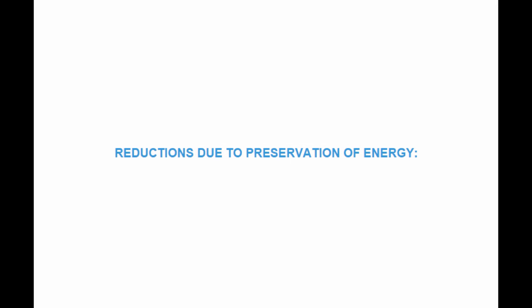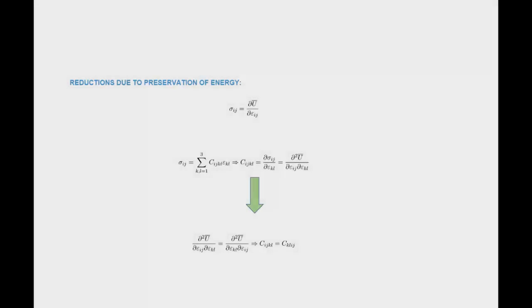Next we're going to reduce the number of constants by considering that this material is elastic, which means it preserves energy. Saying that the material is elastic means there's an energy that can be stored in the material when it's loaded, and this energy is fully recoverable when the loading is removed. Mathematically, this implies that the stress component sigma_ij is obtained by taking the derivative of that energy function with respect to epsilon_ij.